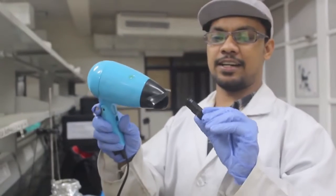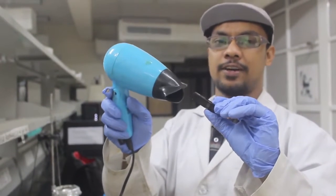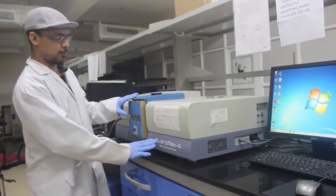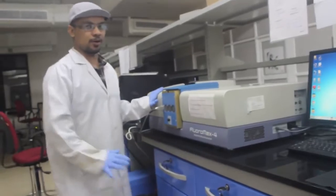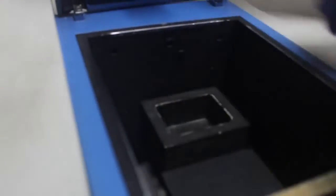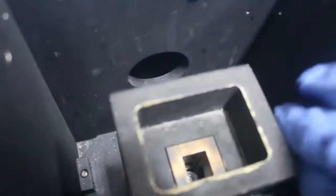After washing is done, you dry the cuvette using a hair dryer. This is the spectrofluorimeter—a FluoroMax from Horiba. You have the lamp here. You put your sample inside here, the cuvette goes in, and the excitation light comes from this narrow window. You take the emission and measure it from the detector here.